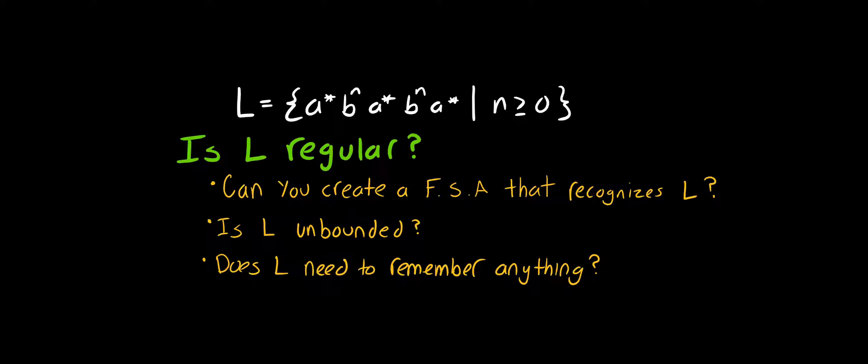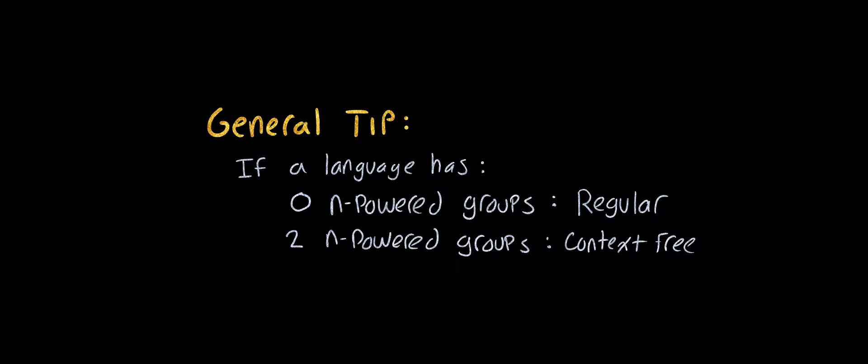The next one is, does L need to remember anything or balance anything? In this case, we do. L needs to balance this first B^N with this second B^N. Those have to be the exact same length. Finite state machines cannot do that because we do not have memory that can keep track of that N. Also, because N is not bounded and does not have an upper bound, N could be infinity, and we have no type of memory for finite state machines that can keep track of that.